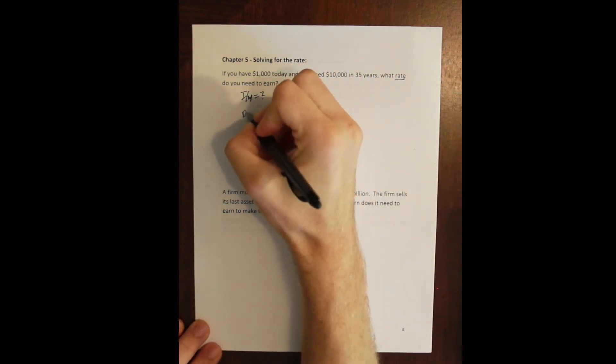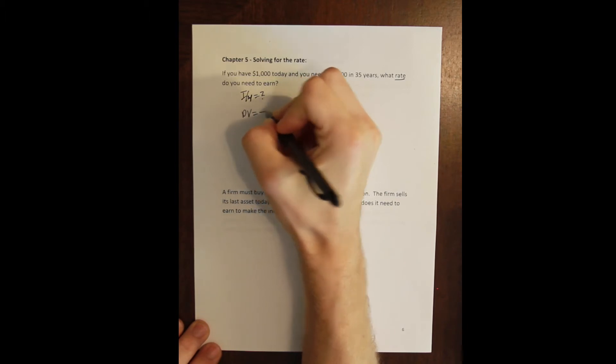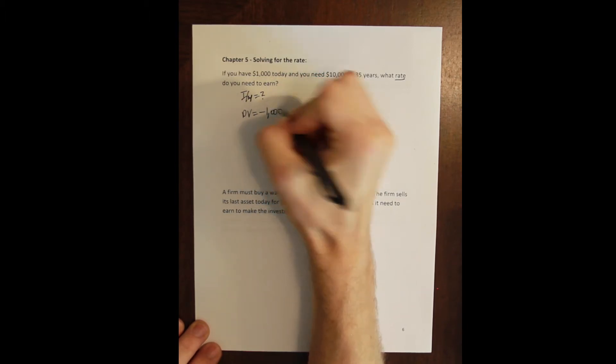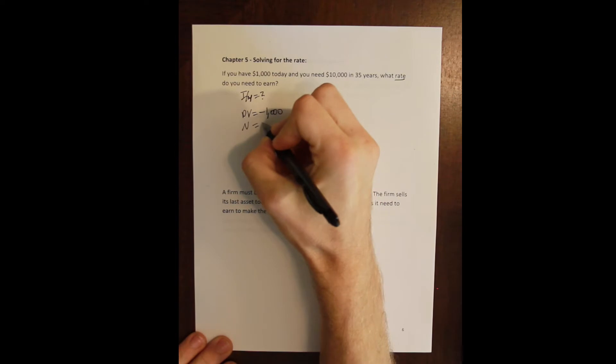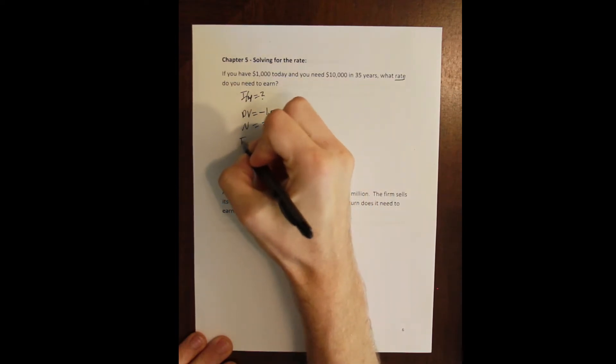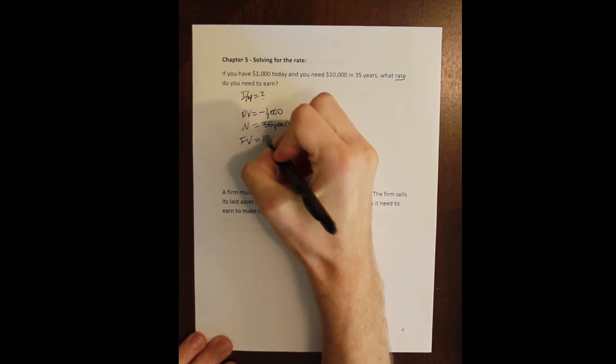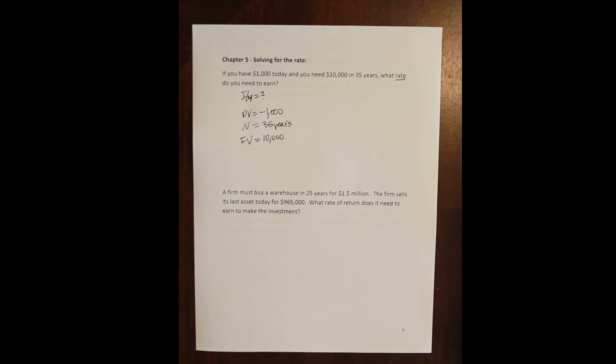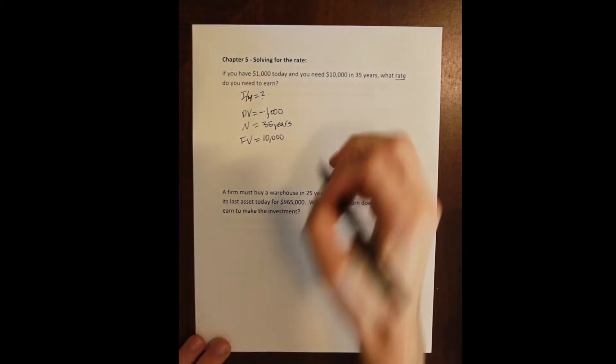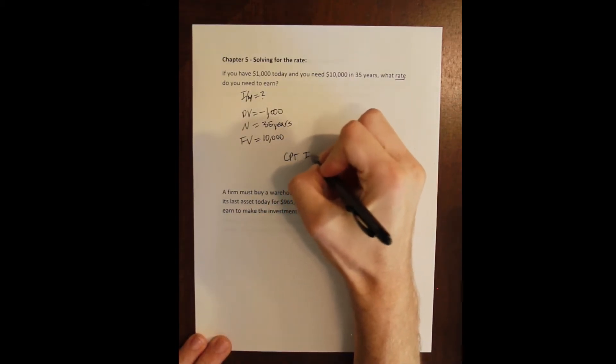What we're going to start with is I have a present value of a thousand and I'm going to invest that money into some investment account. That's my outflow. I'm going to leave it in that investment account for 35 years. And I'm going to hope that whatever I chose is enough to ten times my money, right? To give me $10,000 in future value at the end of this investment.